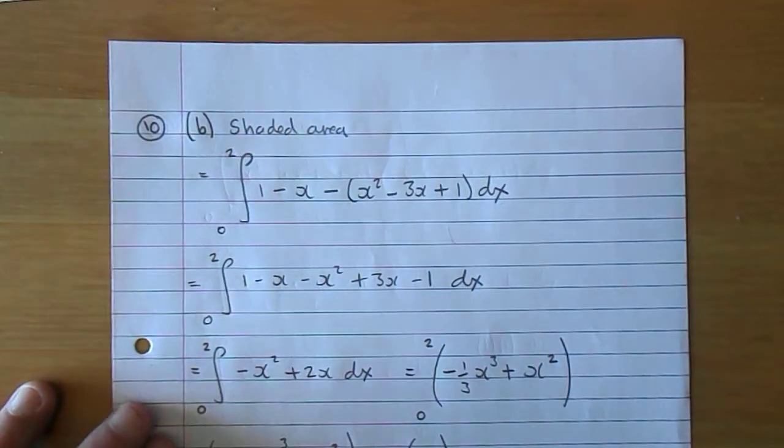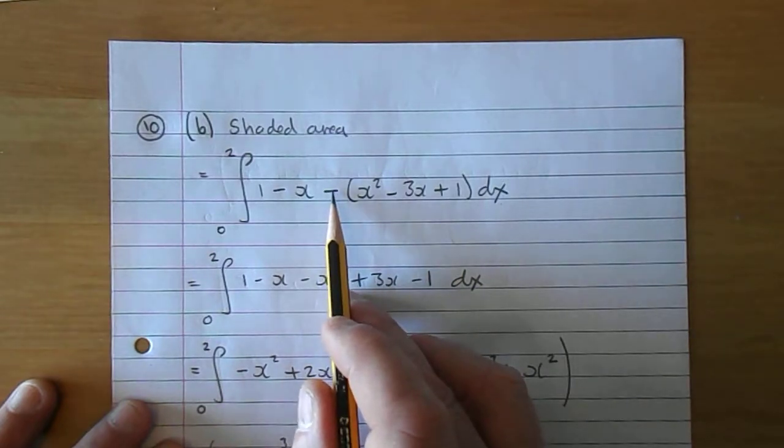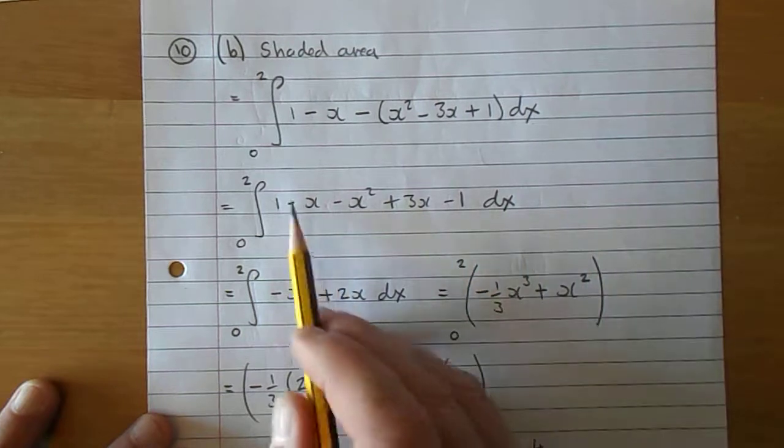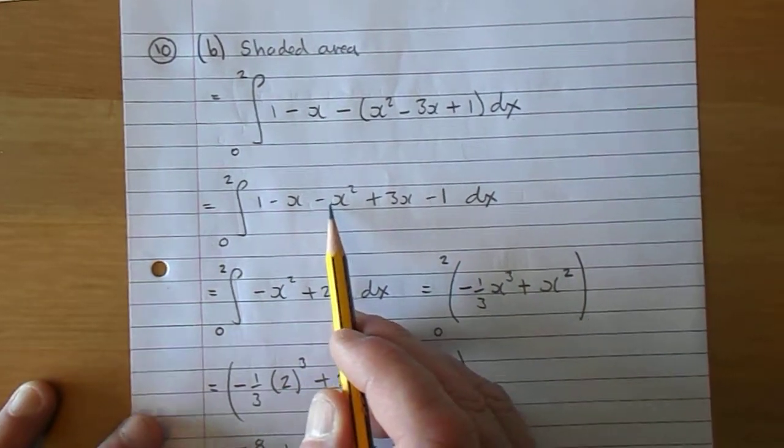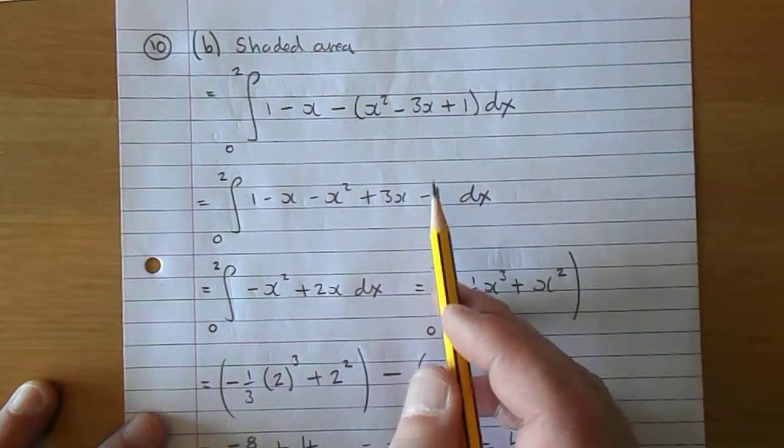So there's the maths: 1 take x take, now just remember, similar to part A, we're going to put the negative through this and see what we get. So we've got 1 take x, take x squared, take take plus 3x, take plus is a take 1.